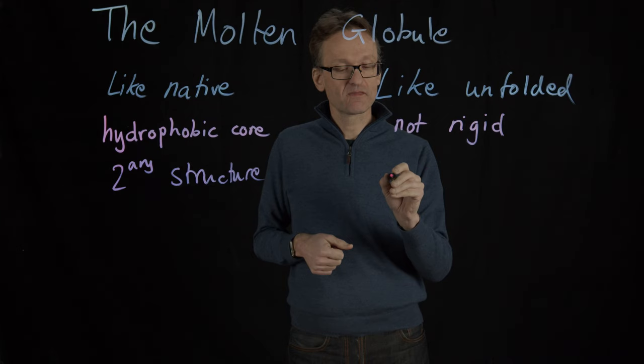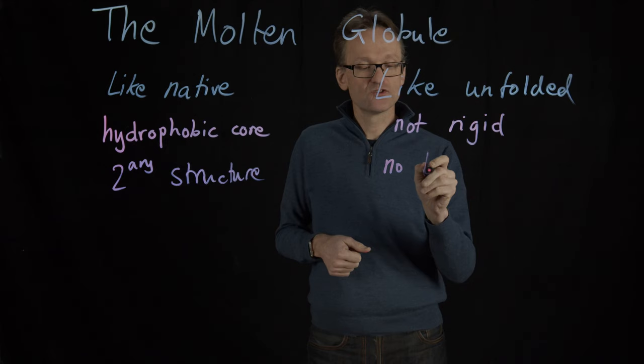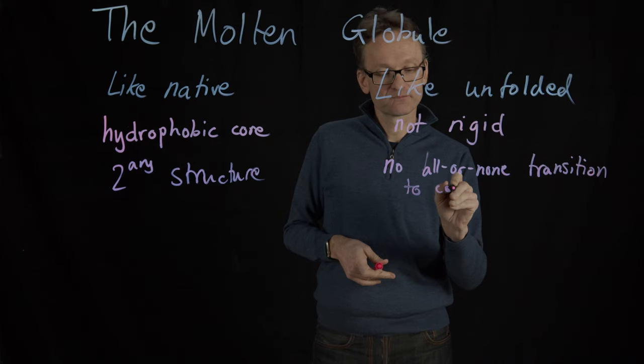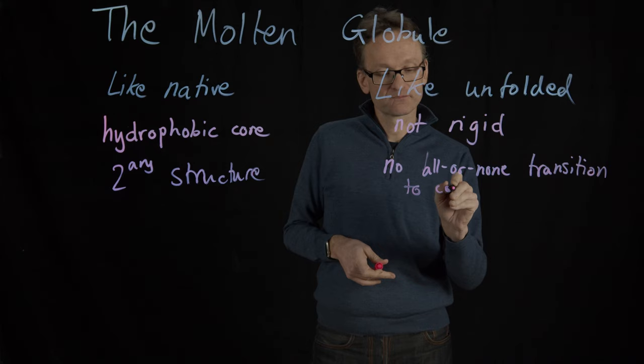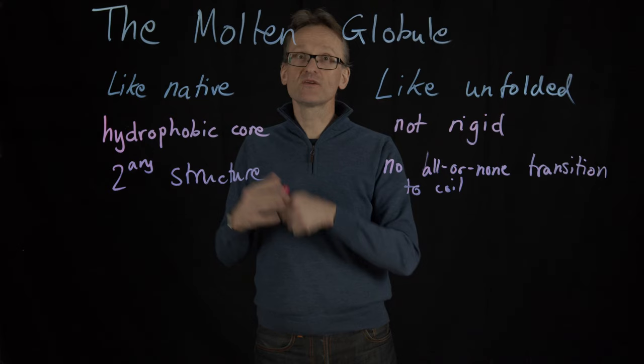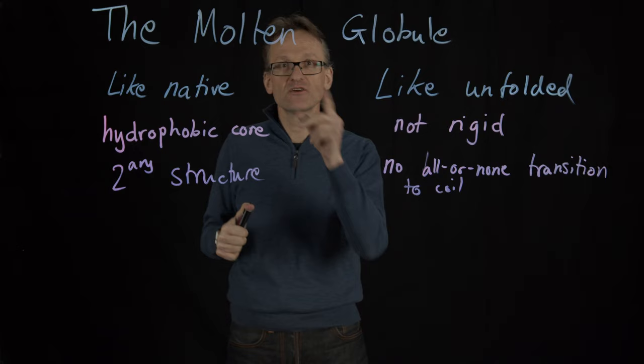There is no all-or-none transition to coil. What I mean by that is that this phase transition, the magic thing that happens, that happens between the molten globule and the native state. Once you are in the molten globule it's much smoother to completely unfold. By the time you're in the molten globule we've lost the magic. You're no longer a protein and you're not going to have any beautiful function. We'll look at that later.